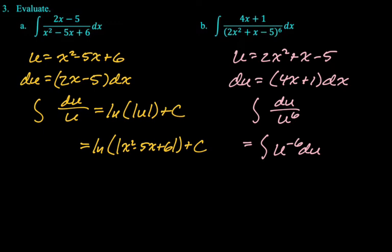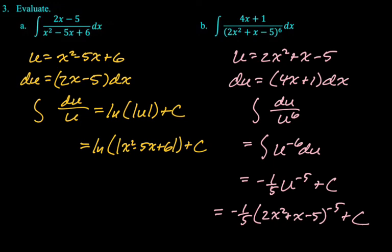Even if I don't write it on paper, I'm definitely in my head rewriting that as u to the negative 6, because then I can do plus 1 times the reciprocal. So plus 1 times the reciprocal gives me negative 1 fifth u to the negative 5th plus c. And then we know that u is 2x squared plus x minus 5. So these are two examples where we had quadratic things in the denominator. We tried to make the quadratic in the denominator equal u both times to see if it works, because if that works, you're basically done.